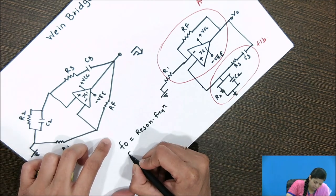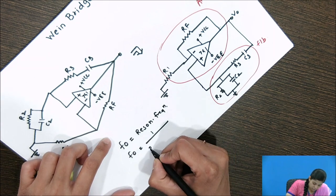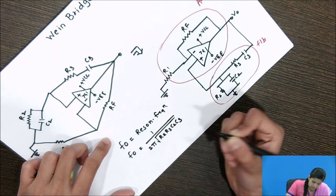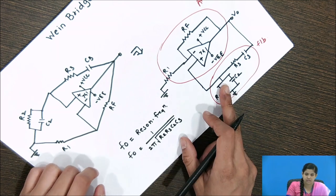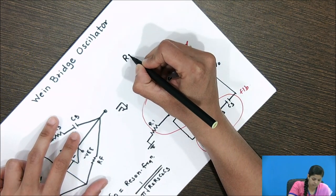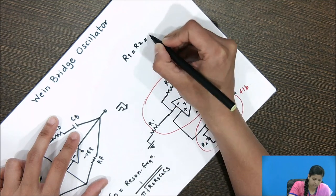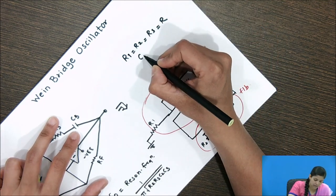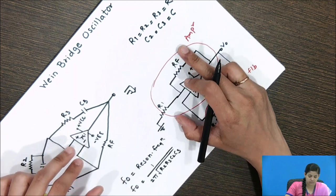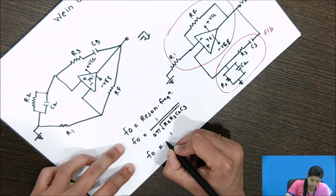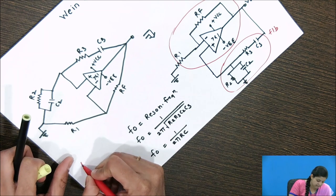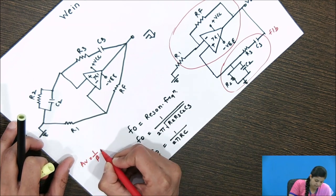The frequency of oscillation in the Wien bridge oscillator can be given as FO = 1 / (2π√(R2·R3·C2·C3)). If we consider the values R1 = R2 = R3 = R and capacitors C2 = C3 = C, by substituting these conditions the frequency of oscillation simplifies to FO = 1 / (2πRC). At this particular frequency, the gain achieved is Av = 1/β = 3.